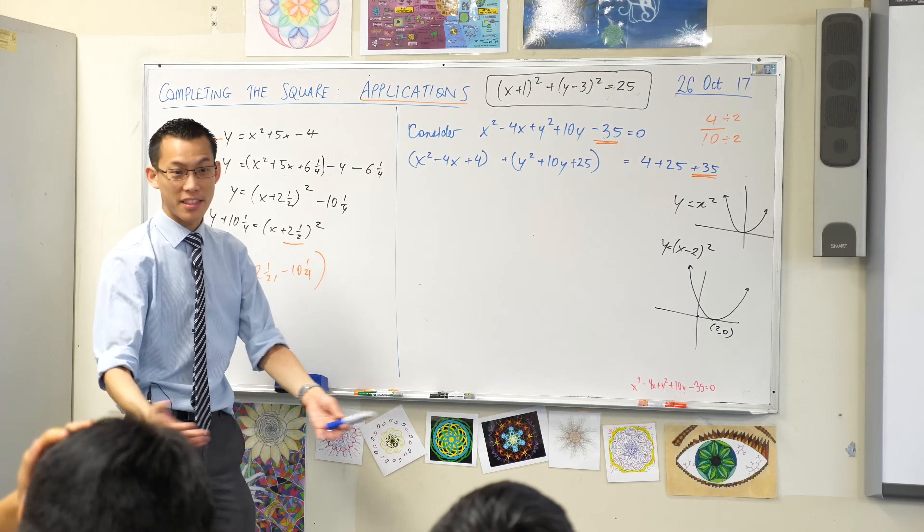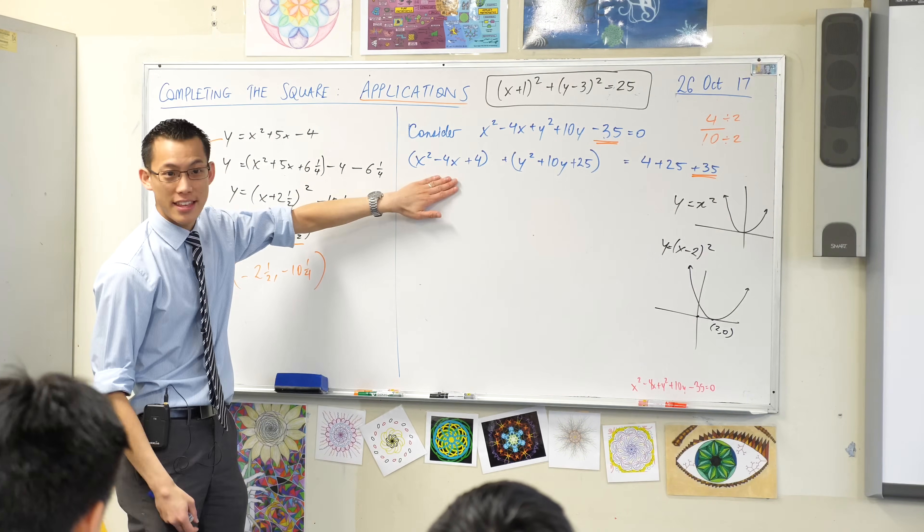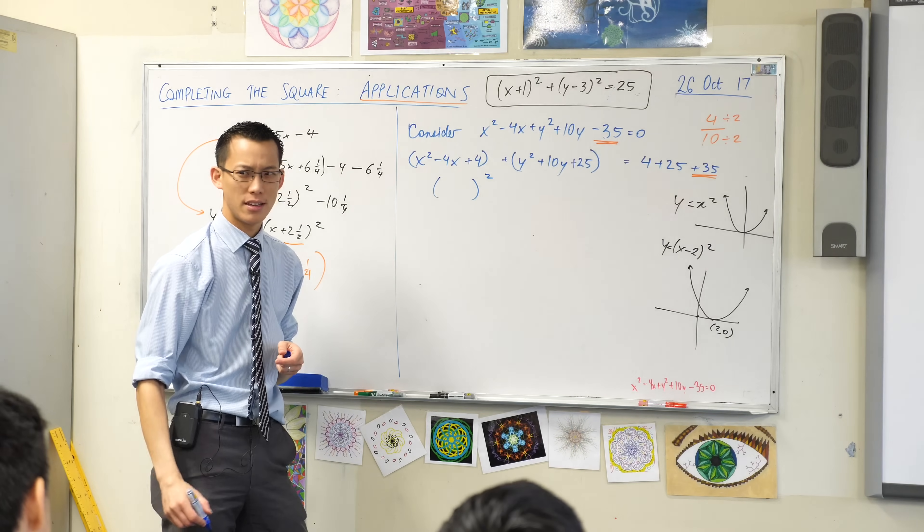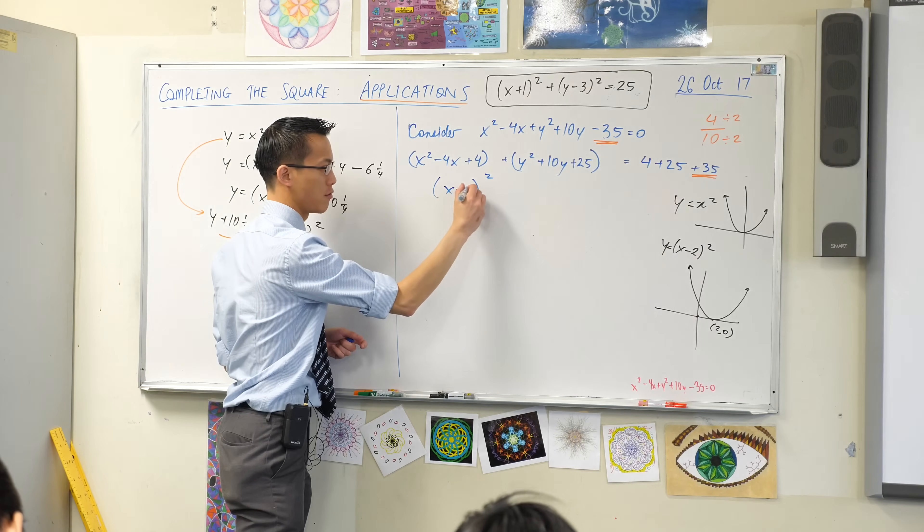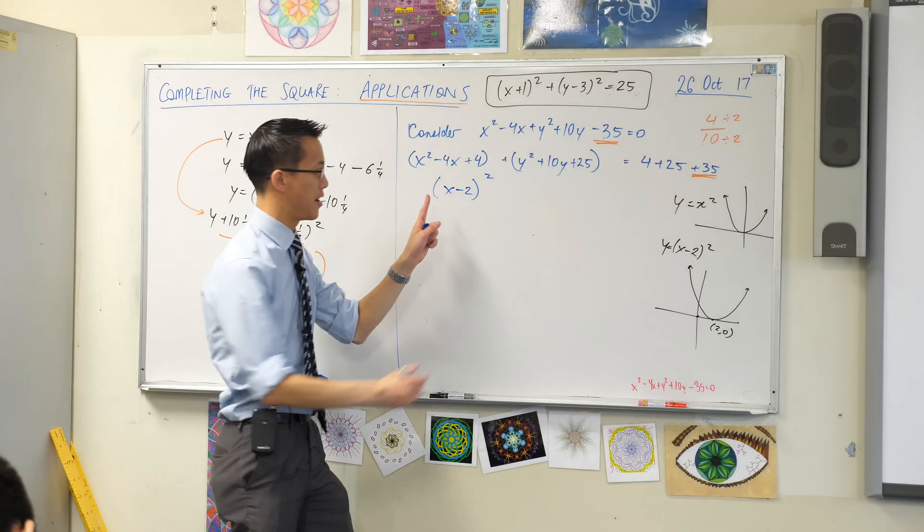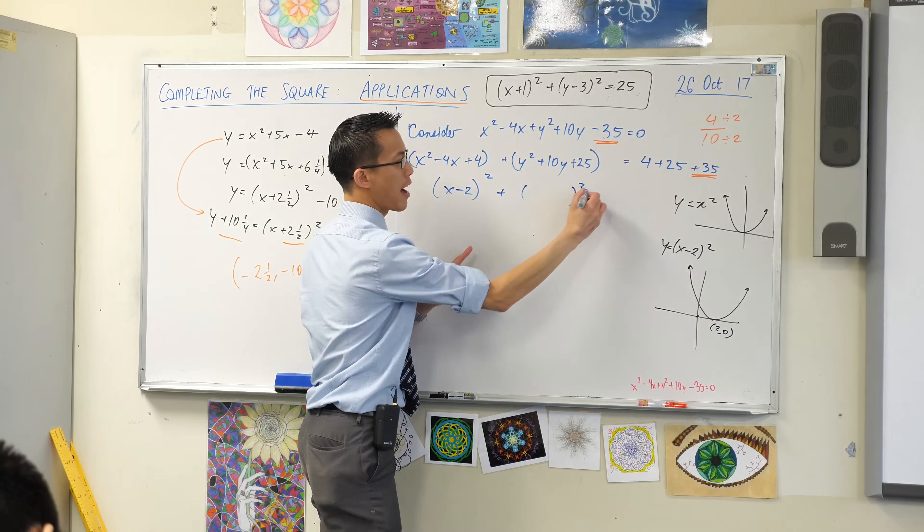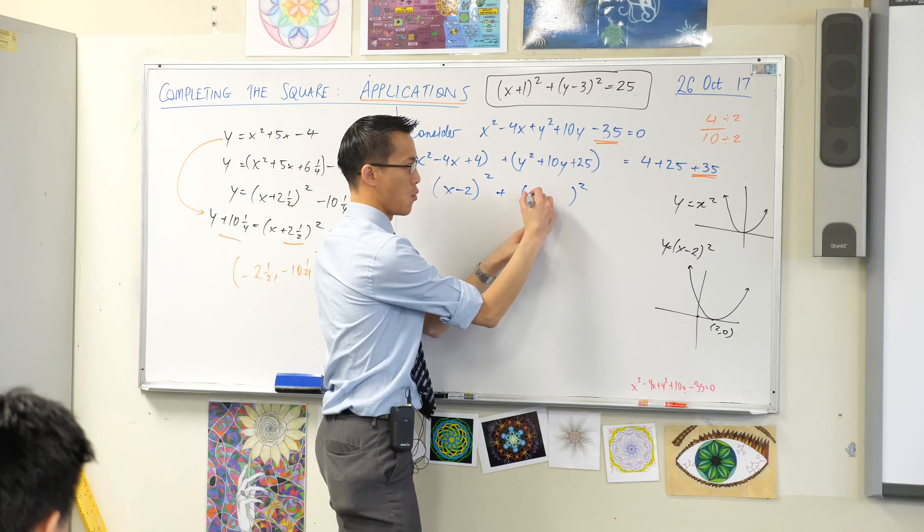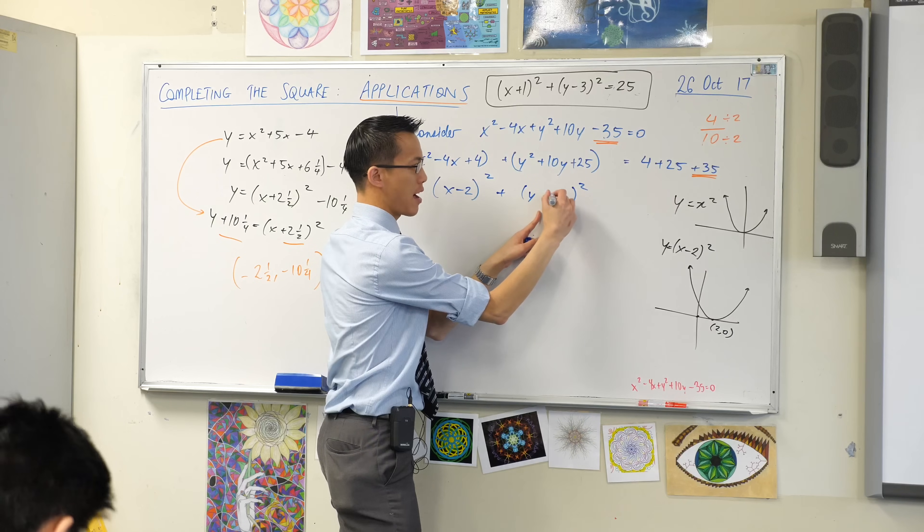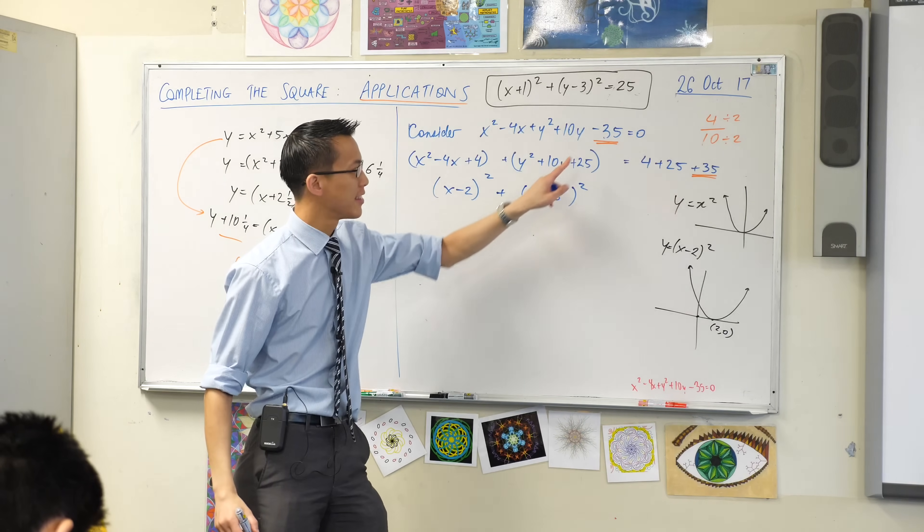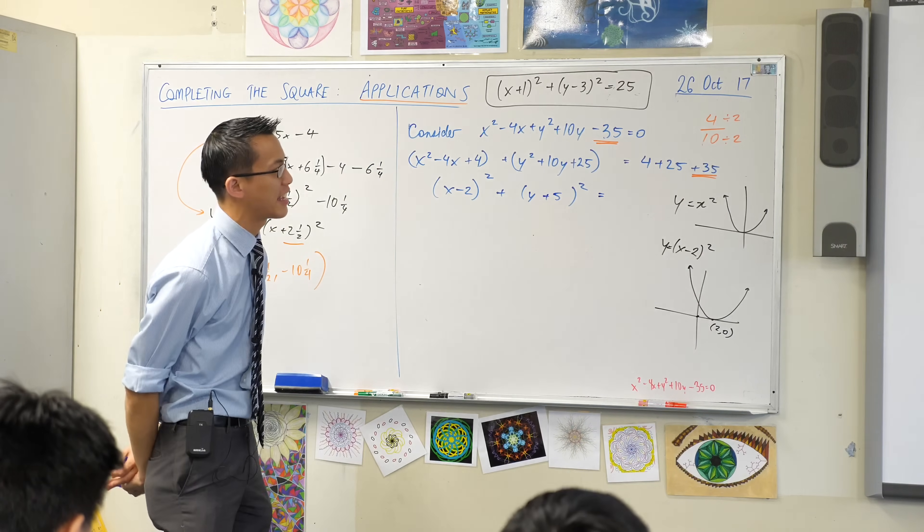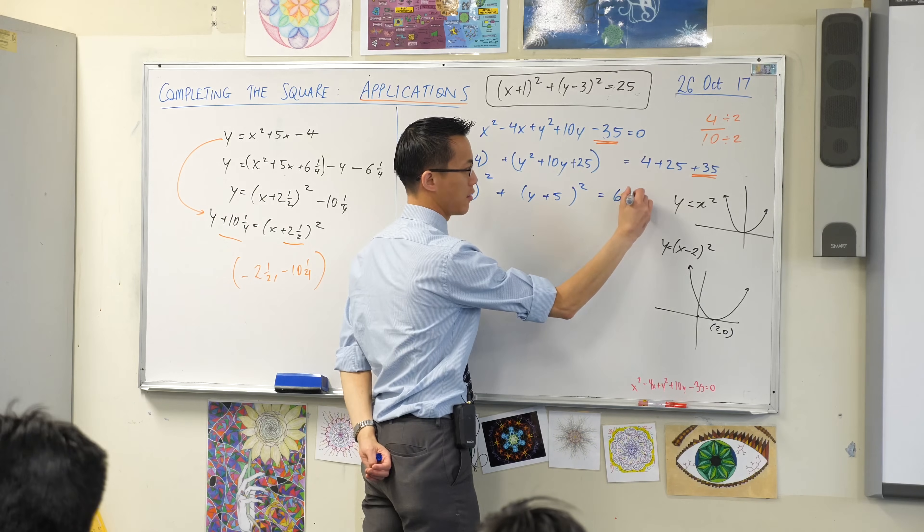Now I'm ready to make the magic happen. I added this 4 in order to turn this into what square? X minus 2. That's factored out. I added 25 here to turn this into what square? Y plus 5. And lastly, I need to add up everything on the right hand side, which looks to me like it's 64.